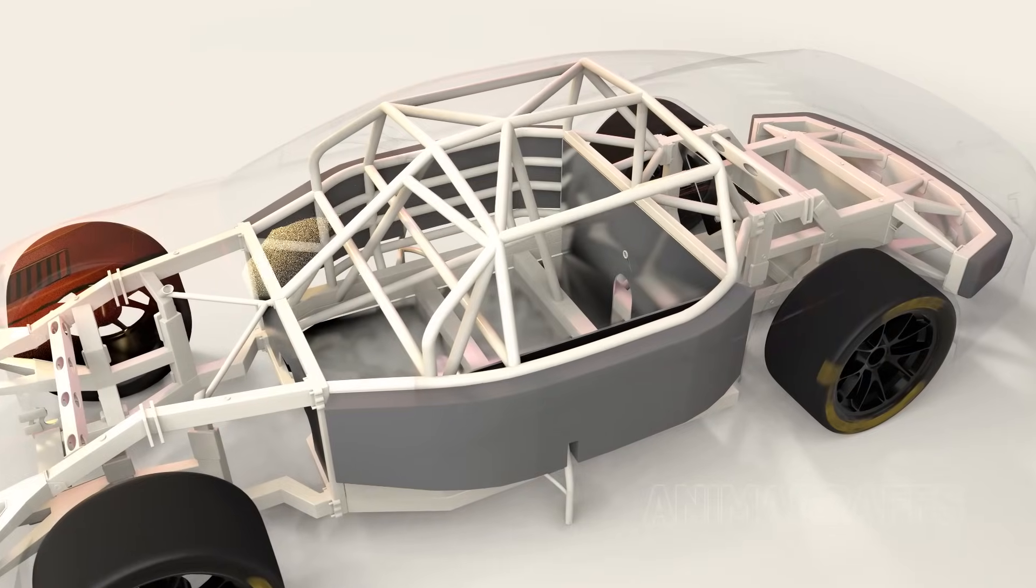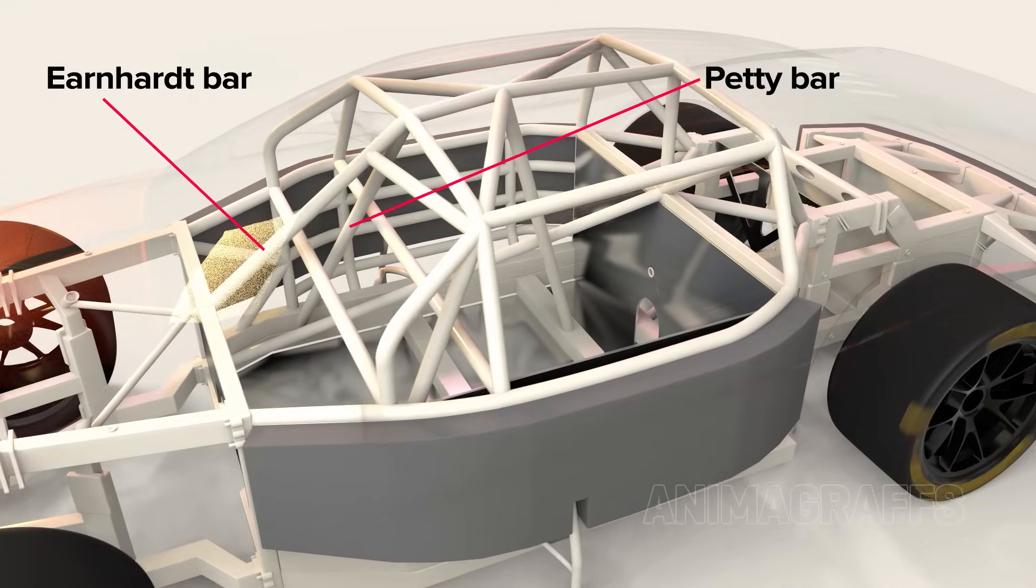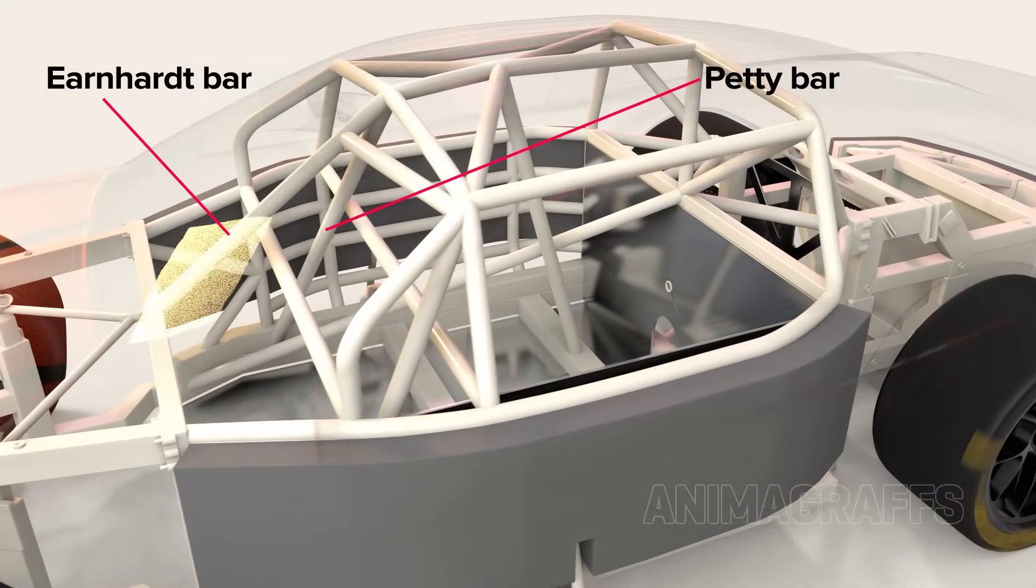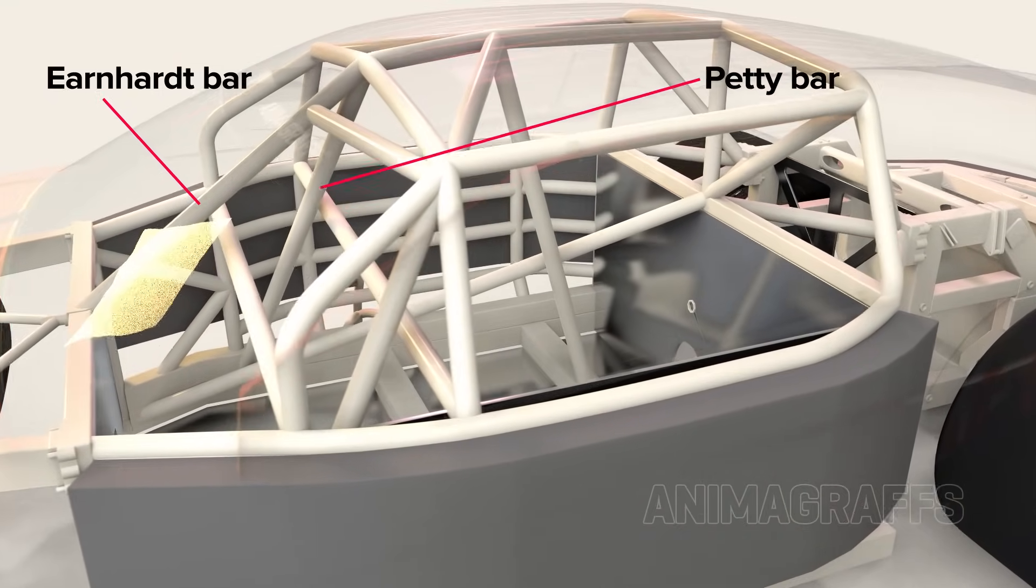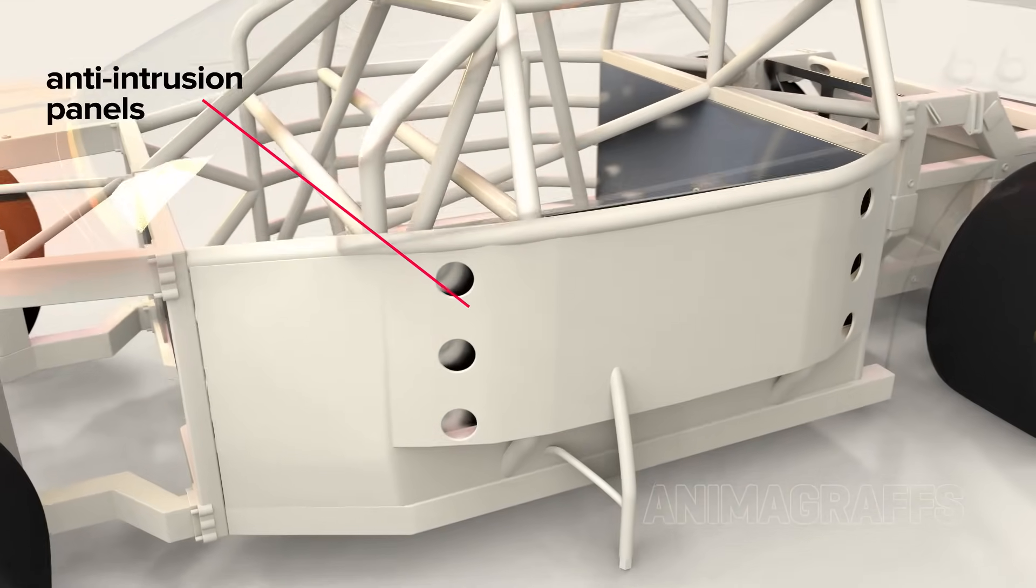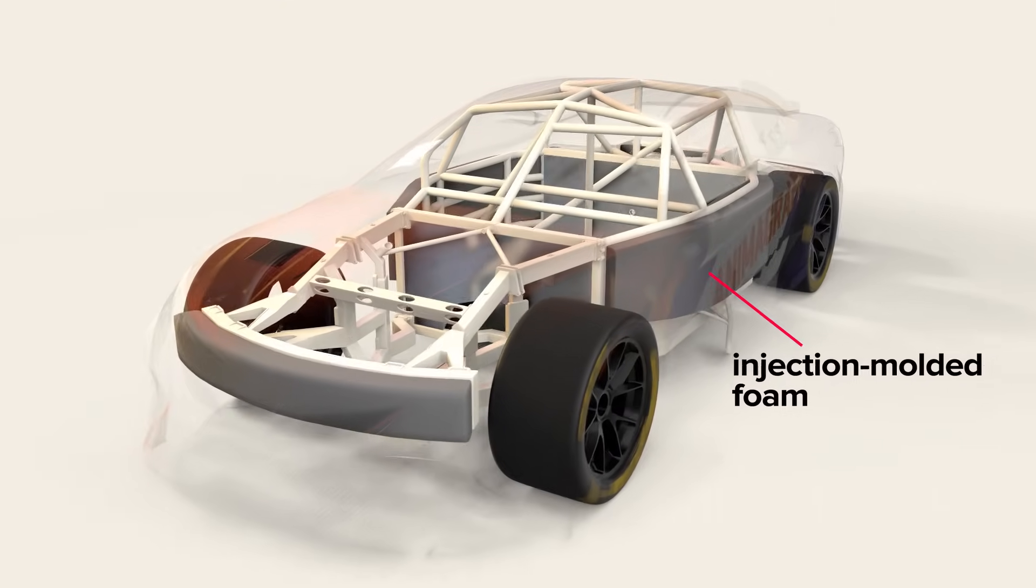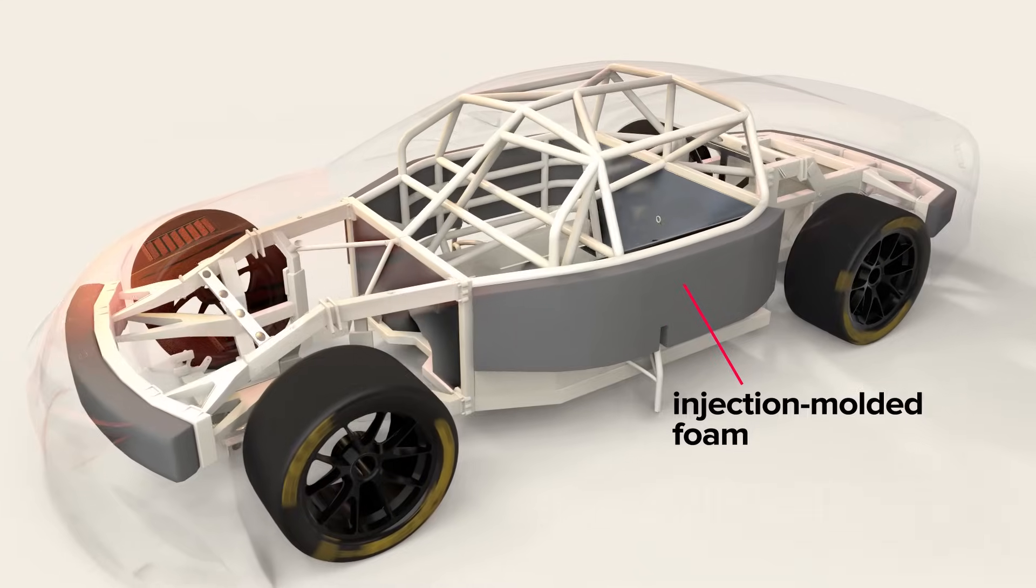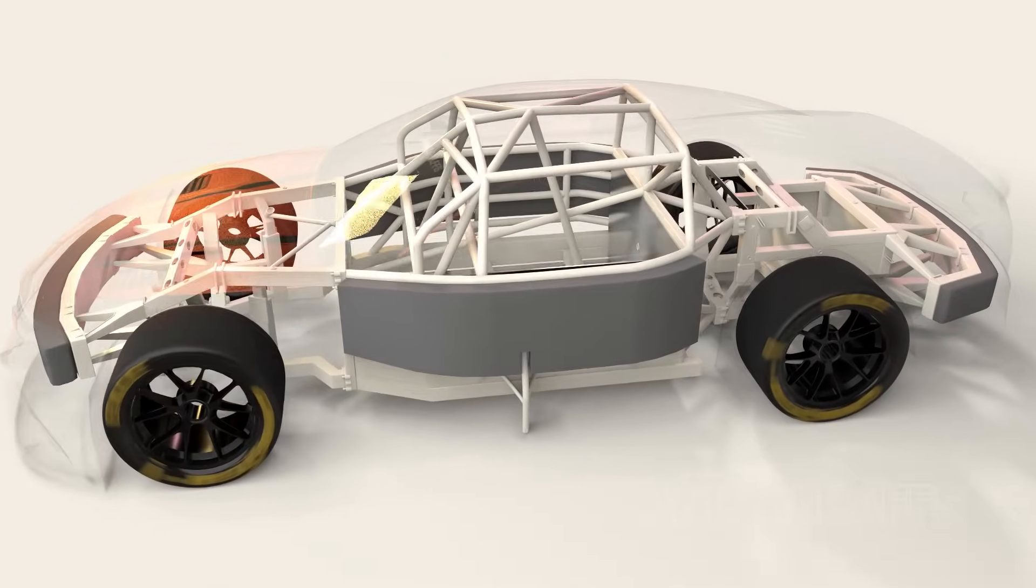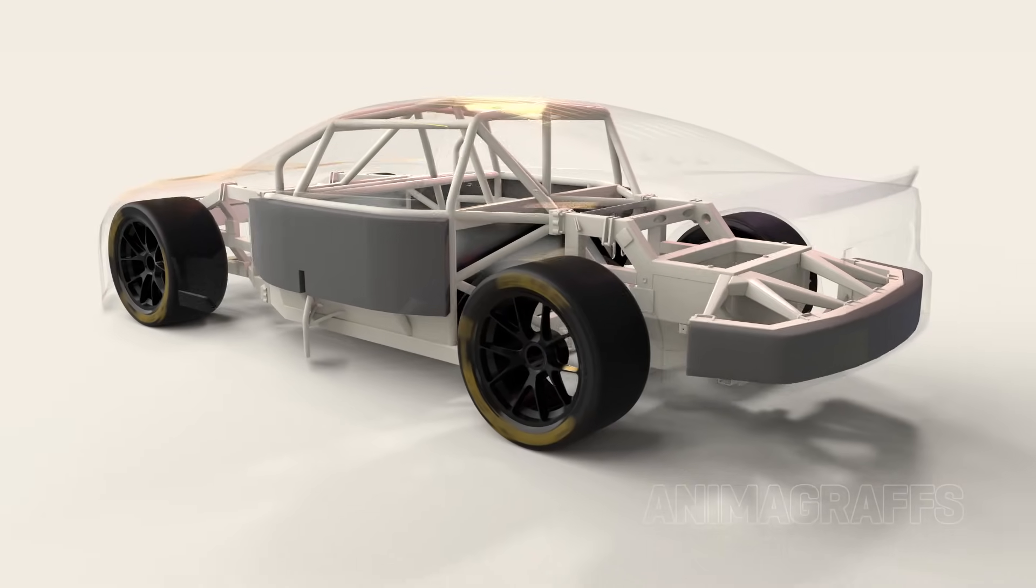The roll cage is the driver's primary protection. Certain bars were implemented after devastating crashes, and are named after the drivers that were involved. Heavy steel anti-intrusion panels keep objects from entering the vehicle's sides during a crash. Thick, injection-molded foam blocks cover the doors as well as the front and rear bumpers, increasing the car's ability to absorb impacts from all sides.